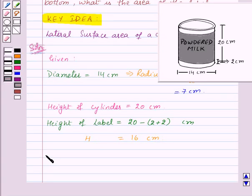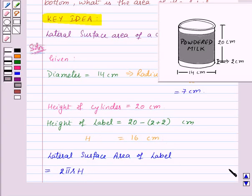So let us find out the lateral surface area of the label, and this will be equal to 2πr into height of the label, that is capital H. Substituting the values we get...